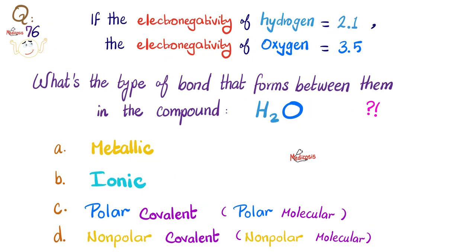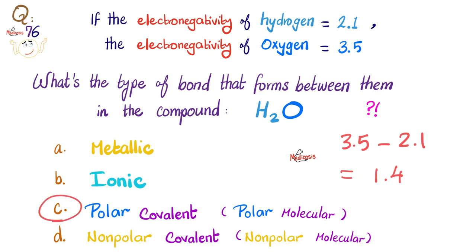How about this other question? The electronegativity of hydrogen is 2.1 and of oxygen is 3.5. What's the type of bond that forms between them in water? 3.5 minus 2.1 gives 1.4. Since this is between 0.4 and 1.7, the compound is polar covalent. Water has covalent bonds and is the quintessential polar molecule.